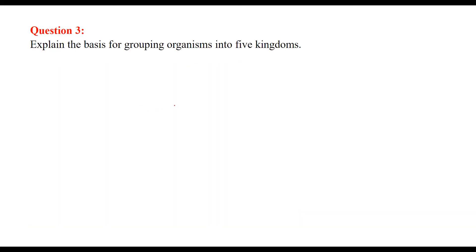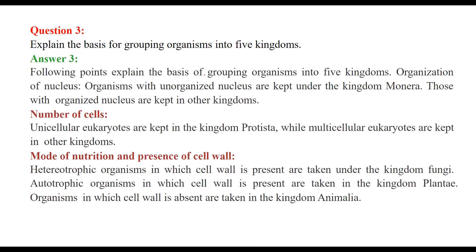Explain the basis for grouping organisms into five kingdoms. The first basis is the organization of the nucleus. Organisms that have an unorganized nucleus can be classified into the kingdom Monera, while others are kept in other kingdoms.